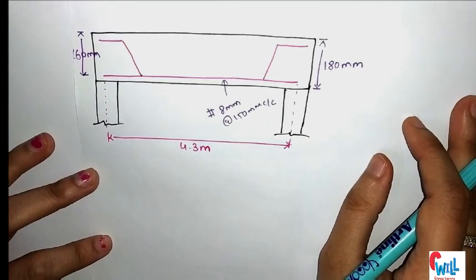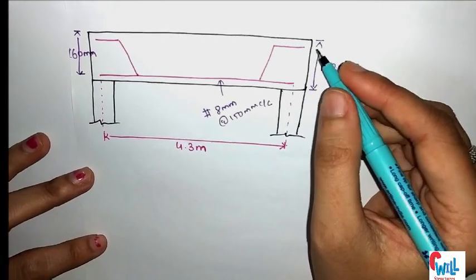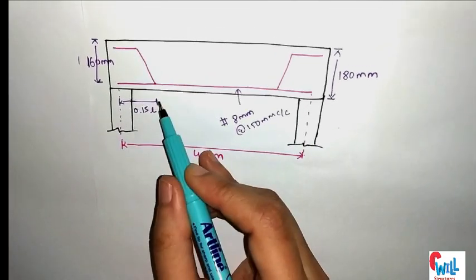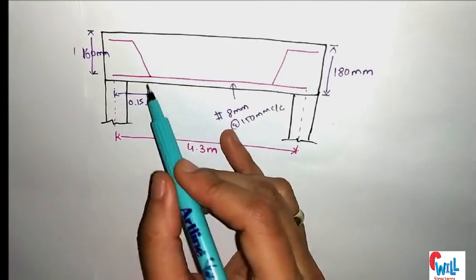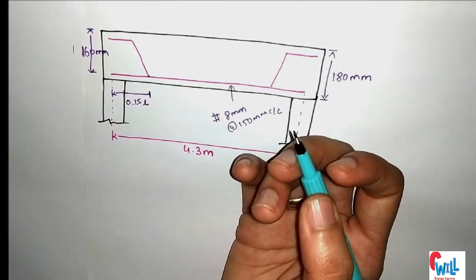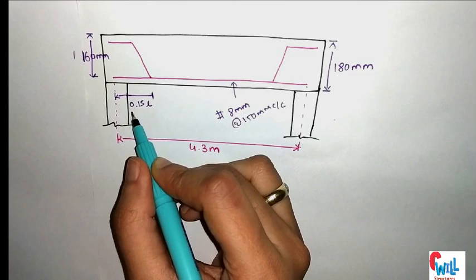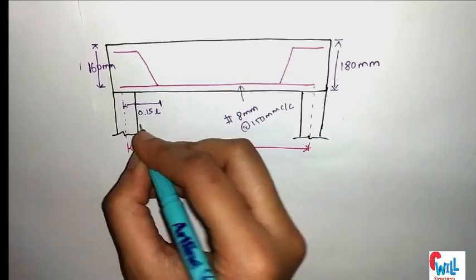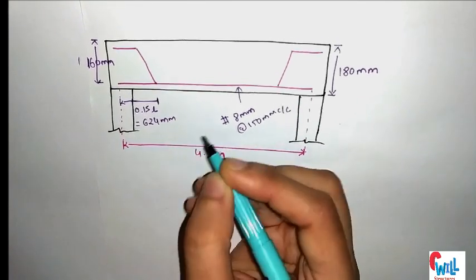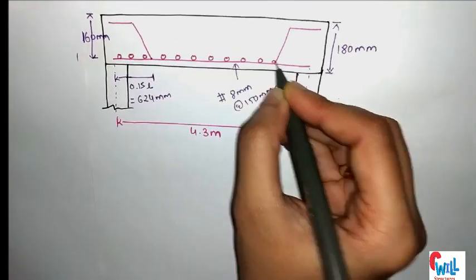Half of the reinforcement should be bent up near the support region. As per Annexure D of IS 456, we extend 50% of the reinforcement to the support, and the distance for bent bars is 0.15L from the support. The cross-section along Y direction shows reinforcement along the longer span direction.